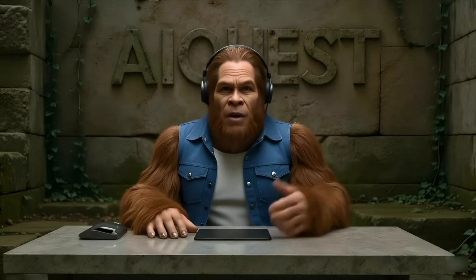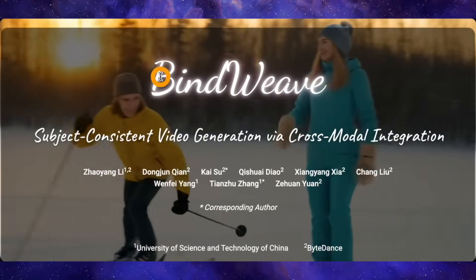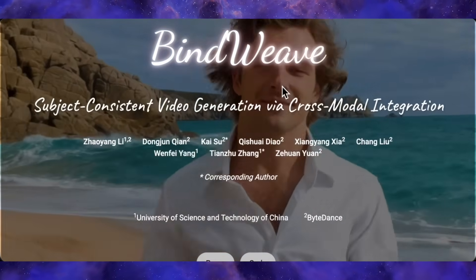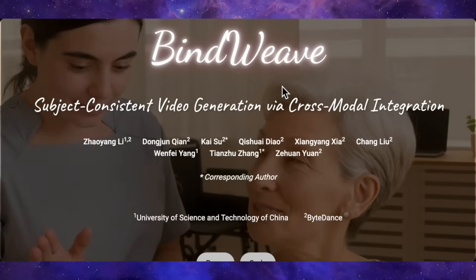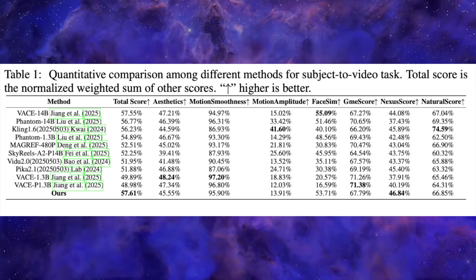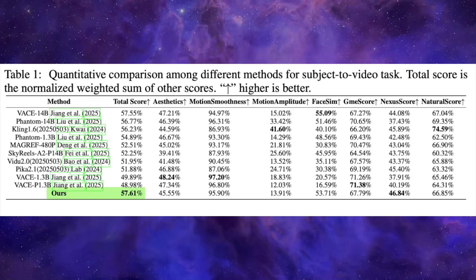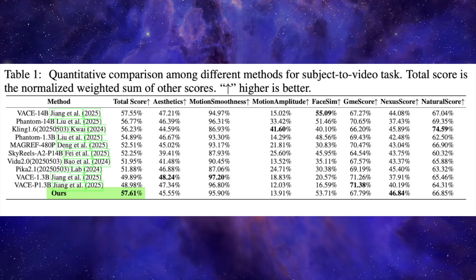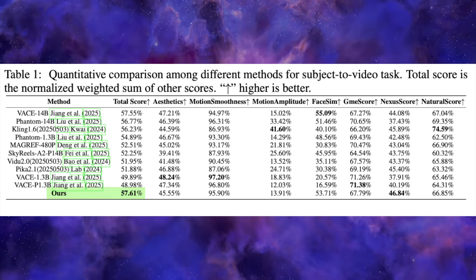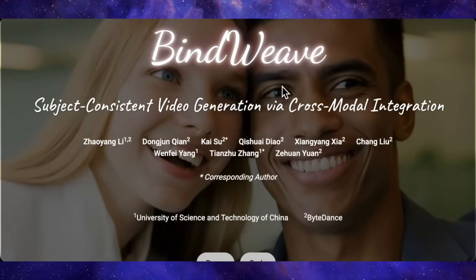ByteDance has introduced a new model — I know, it's a new model every week — but this one, called BindWeave, is worth paying attention to. It's claiming to finally nail multi-subject consistency, and it's got the numbers to back it up, at least on paper. It just hit the number one spot on the OpenS2V benchmark with a 57.61% score, beating Vase 14B and clearly topping Phantom 14B, Kling, and Pika. The scores are close, so today we're going to be the judge — let's dive into these examples and see if the quality really matches the hype.